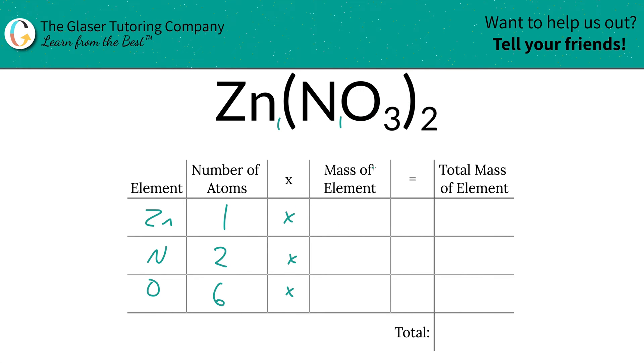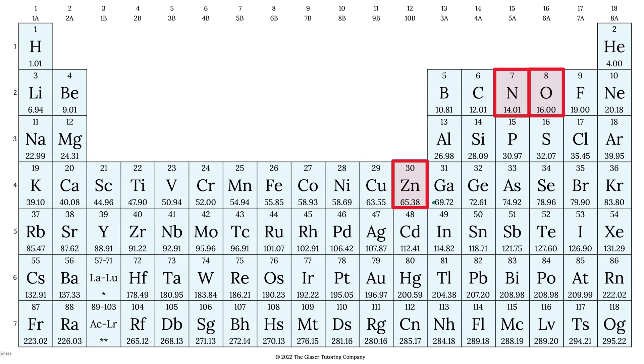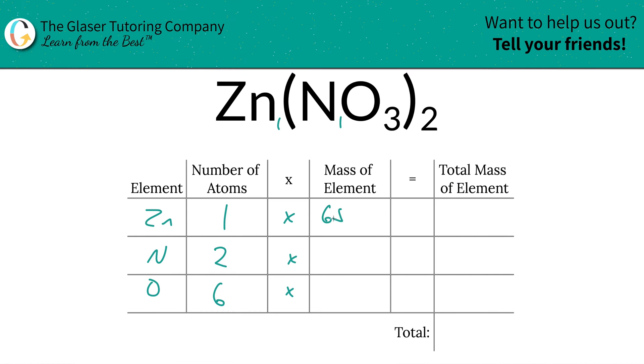Then you're simply going to take those number of atoms and multiply it by the mass of each. These masses are always found on the periodic table. So zinc's mass is going to be 65.38, nitrogen is 14.01, and oxygen is 16. So let's write them down.